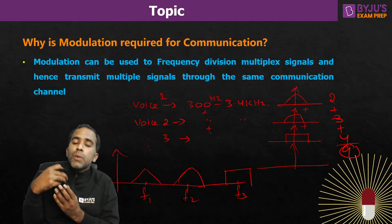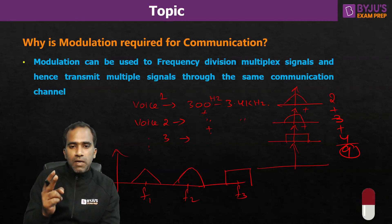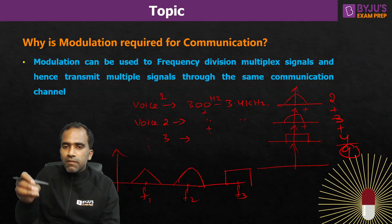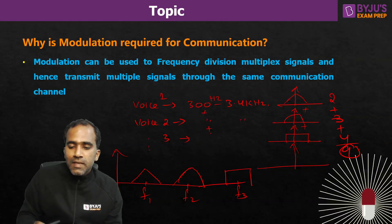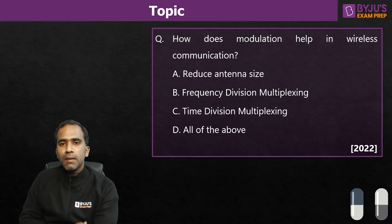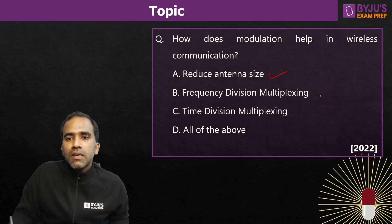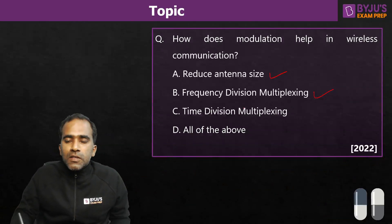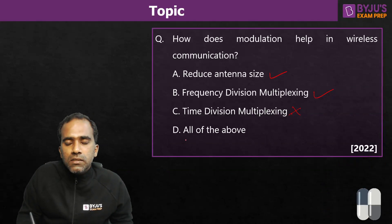So modulation helps us in both wired and wireless communication. For wireless communication, the two reasons are: antenna size reduction, and frequency division multiplexing. For wired communication, we do not need antennas, so the first advantage does not apply — but the frequency division multiplexing advantage is still there. Modulation helps only in frequency division multiplexing, not in time division multiplexing. So if it is an MSQ question, both antenna size reduction and FDM are correct characteristics.